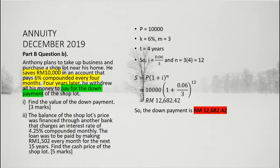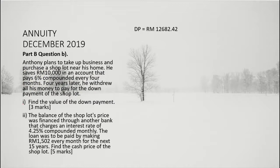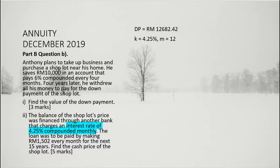The second part of the question is on the topic of annuity. In this situation, recall that the money saved four years ago is now valued at RM 12,682.42, which is used by Anthony as down payment for his purchase of his shop lot. The balance after deduction of the down payment was taken as a loan from a bank that charges an interest rate of 4.25% compounded monthly. This gives us the nominal rate k equal to 4.25% and the conversion frequency m equal to 12. He promised to pay back the loan by making monthly payments of RM 1,502, which gives us R equal to RM 1,502. These payments will be made for a duration of 15 years, such that t is equal to 15.